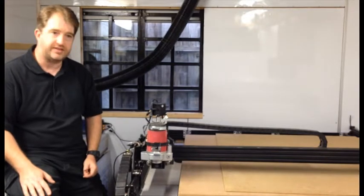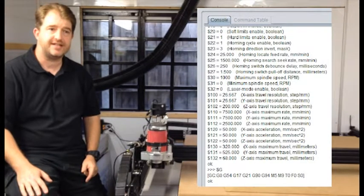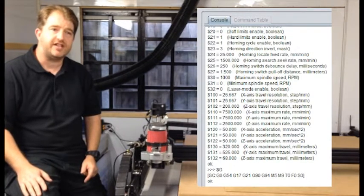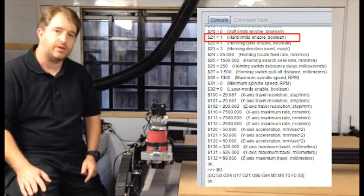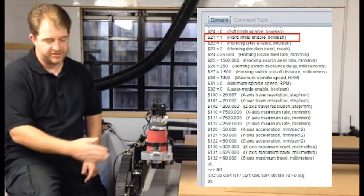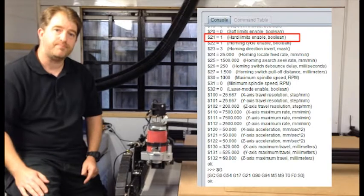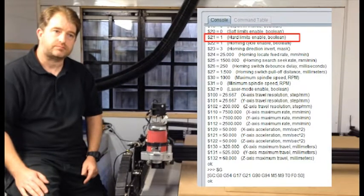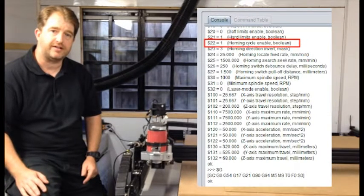So these are my GRBL settings and the ones that we're interested in are $21. If you set that to zero then your hard limits are off, if set to one then that turns your hard limits on which means that if your machine touches the micro switches it will stop. And then the other one is homing, that is $22. If you want to turn homing on you have to make that equal to one.